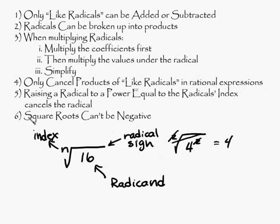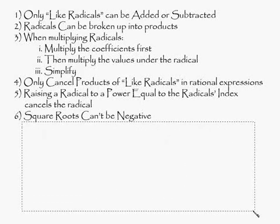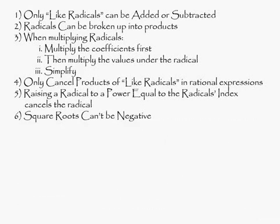Let me get rid of this here. And you should really write these down because as we're working some of the problems, I'm going to refer to some of these rules here. Number one is only like radicals can be added or subtracted. So if you have something like root 2 plus root 2, this is equal to 2 root 2.